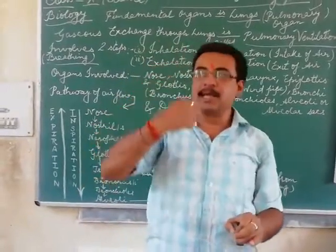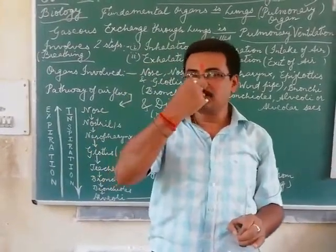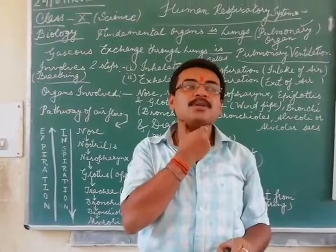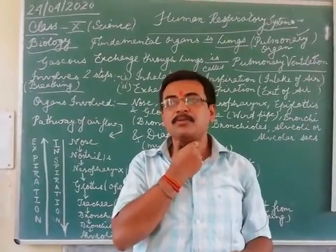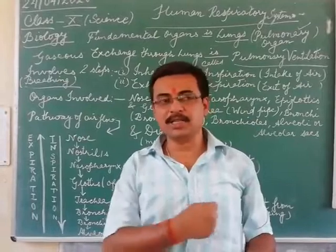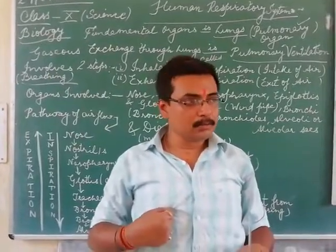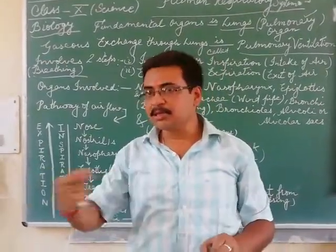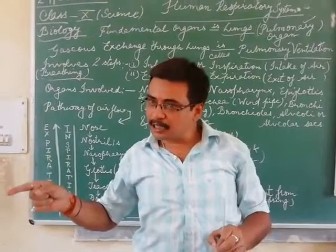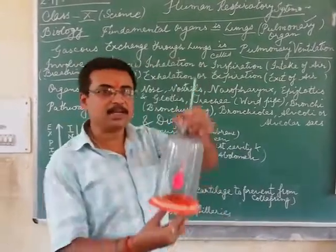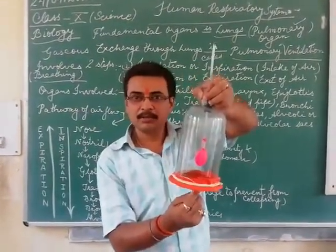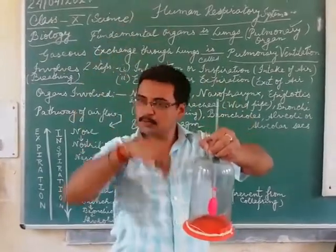Air is taken in, moves into the nose, nostrils, then nasopharynx, pharynx, trachea, then bronchus, bronchioles, and finally your alveoli. So once again — as the diaphragm goes in, air has moved in. During expiration, the diaphragm comes up.